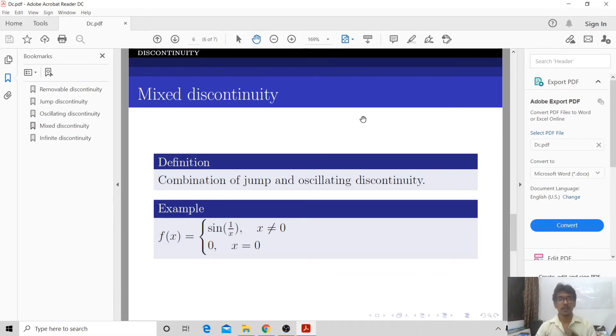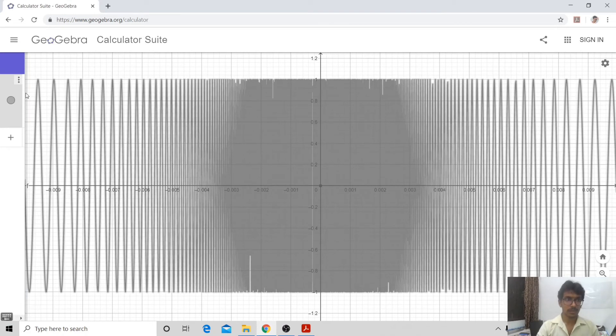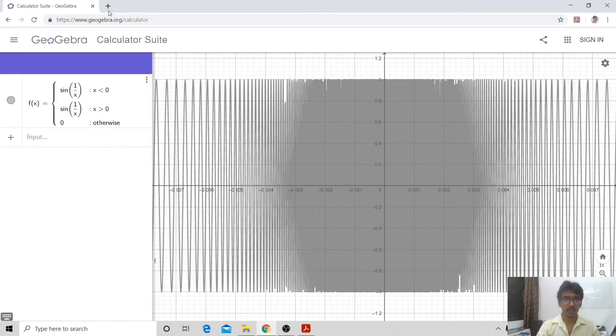Next is mixed discontinuity. It is a combination of both jump and oscillating discontinuity. Let us go and see what happens with this. Here, let us open a new tab.